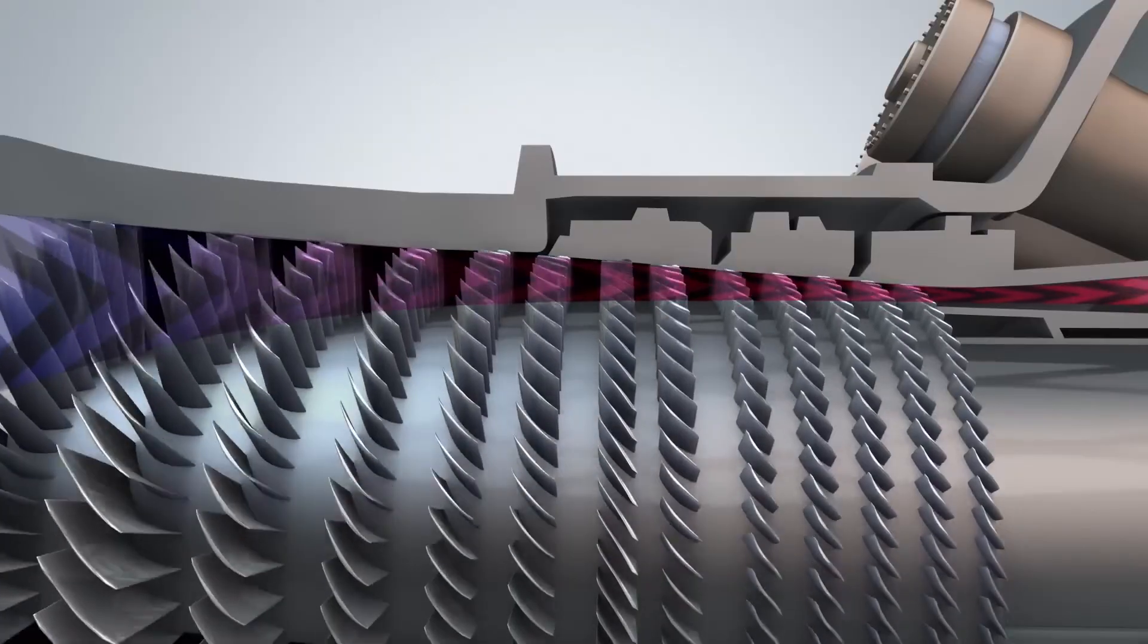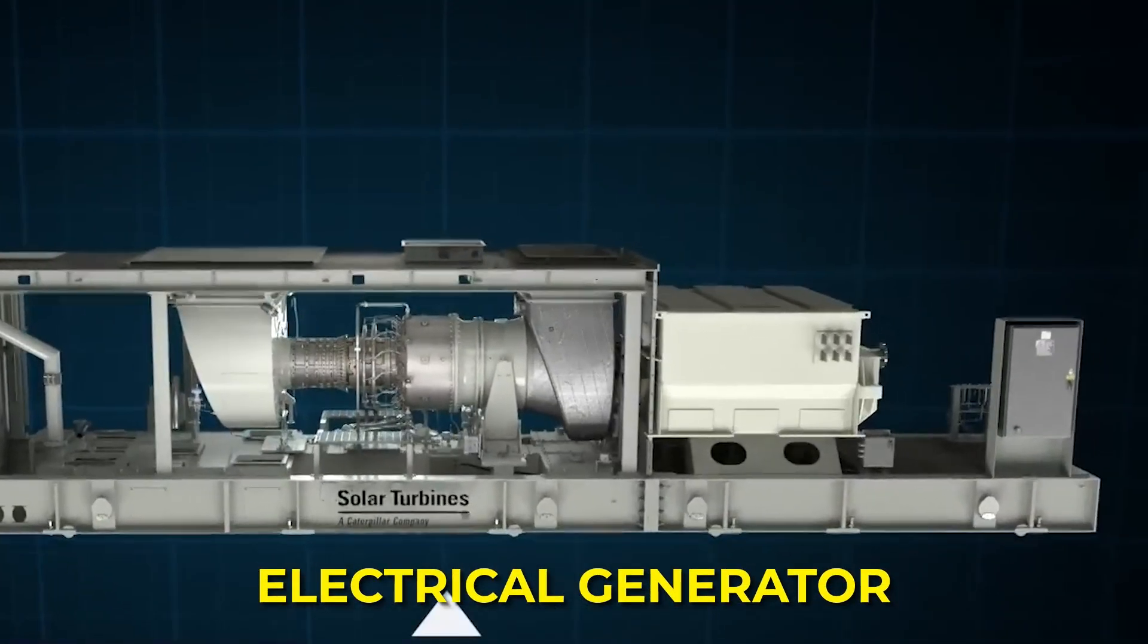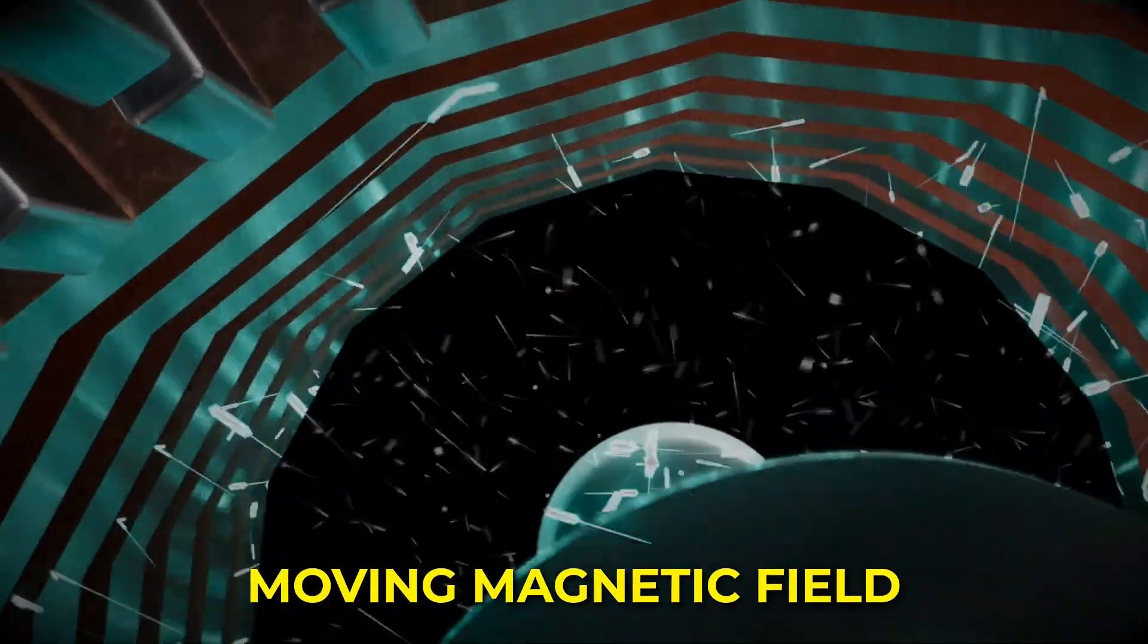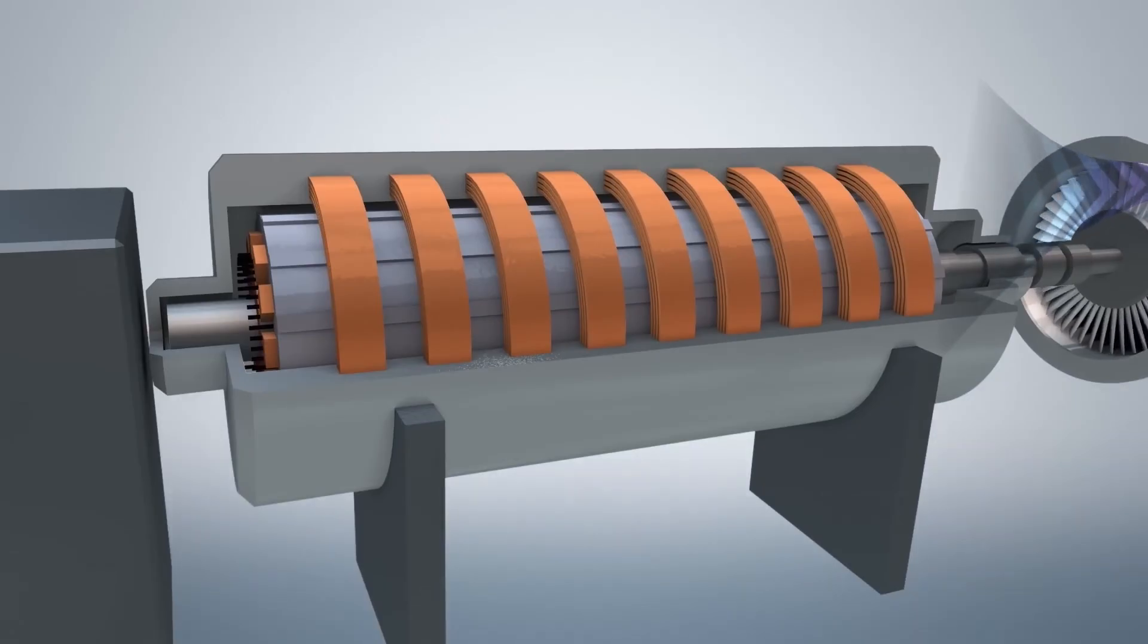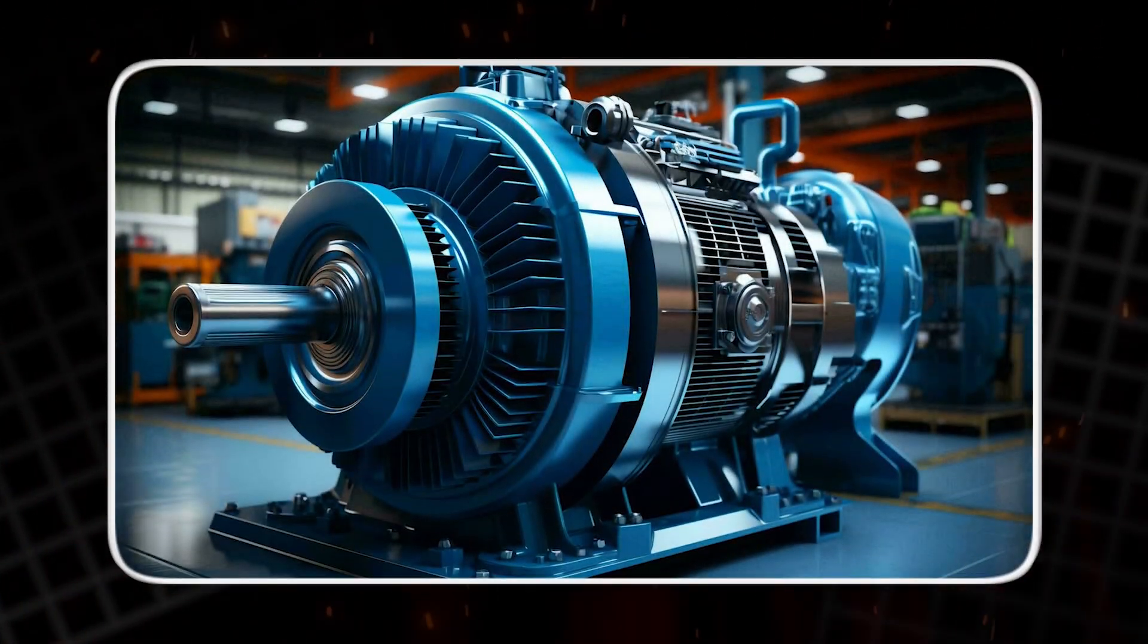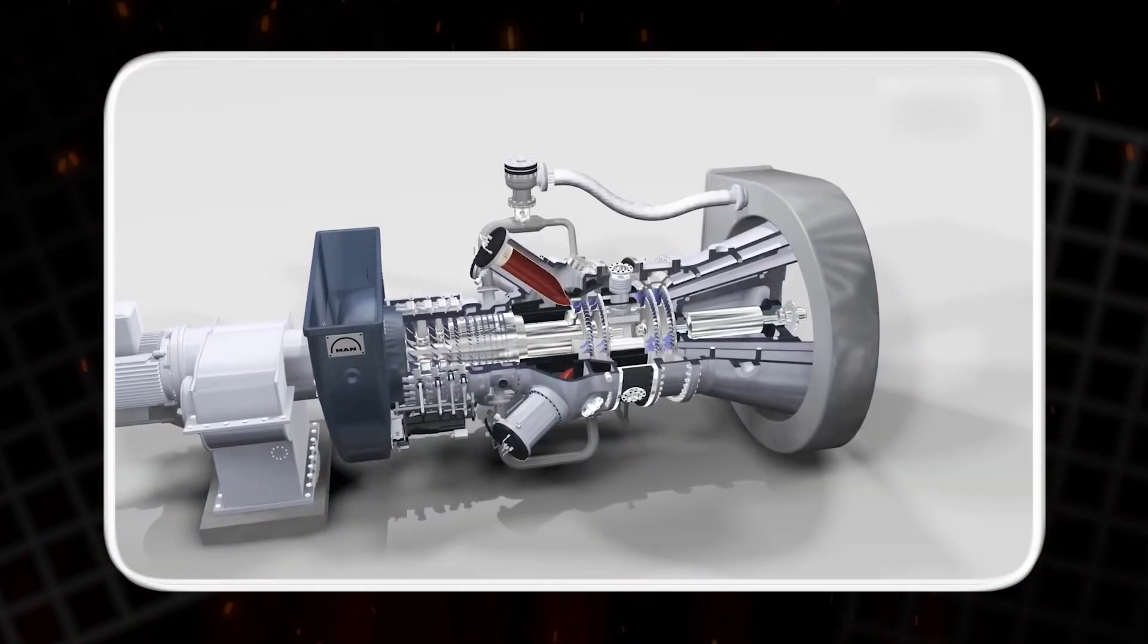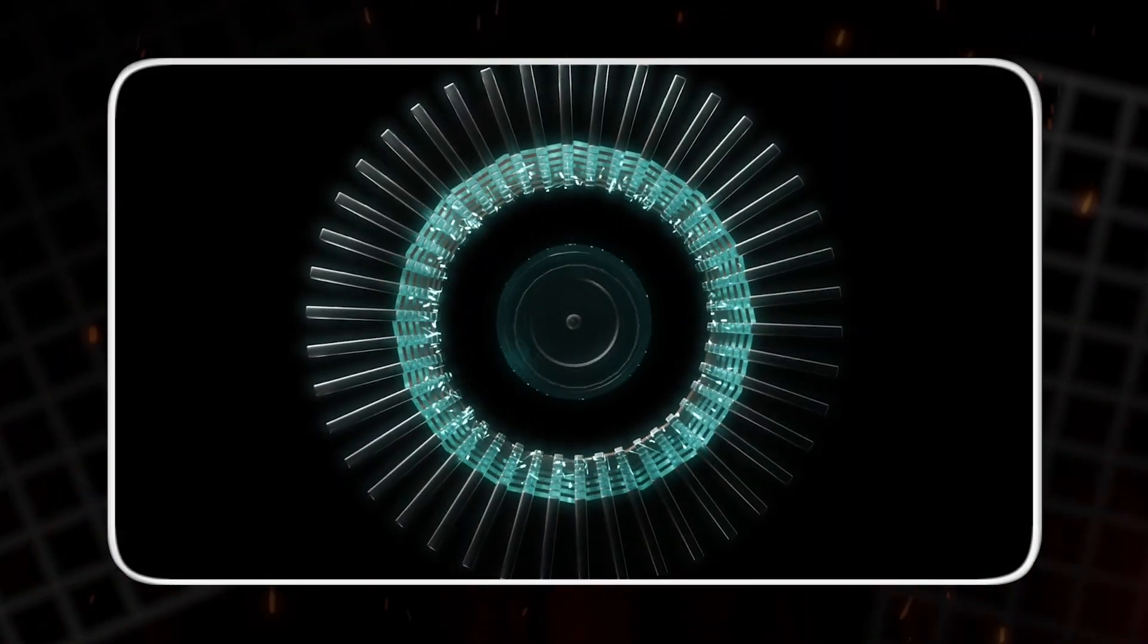The rotational energy from the turbine turns a central shaft, which is connected to an electrical generator. Inside the generator, the rotating magnets produce a moving magnetic field. This field induces current in the surrounding copper coils, creating electricity. It's the same principle as an electric motor, but in reverse. Instead of using electricity to create motion, it uses motion to create electricity.